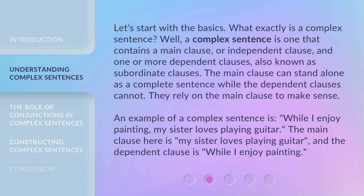Let's start with the basics. What exactly is a complex sentence? Well, a complex sentence is one that contains a main clause, or independent clause, and one or more dependent clauses, also known as subordinate clauses. The main clause can stand alone as a complete sentence while the dependent clauses cannot. They rely on the main clause to make sense. An example of a complex sentence is: 'While I enjoy painting, my sister loves playing guitar.'